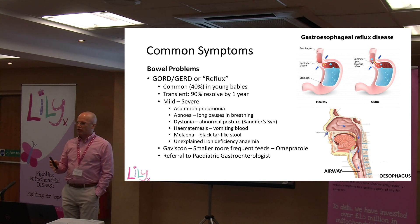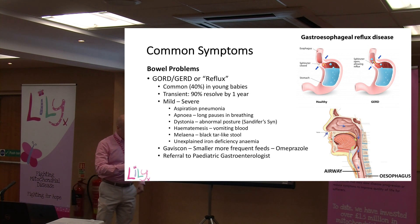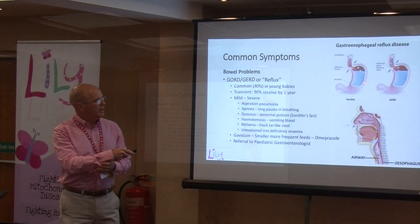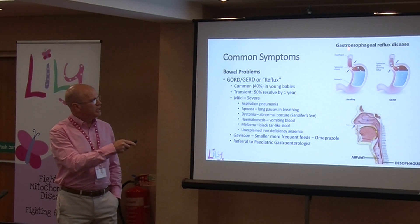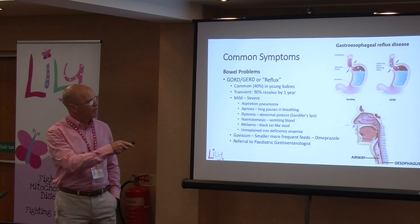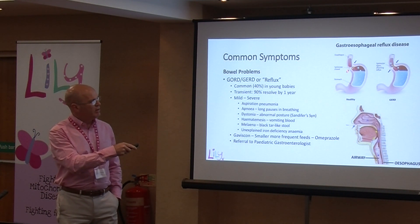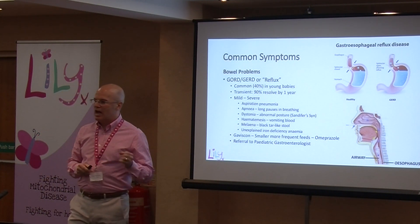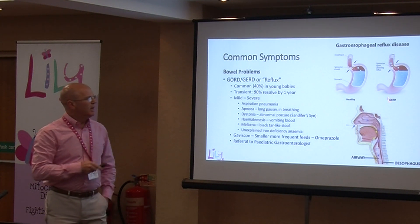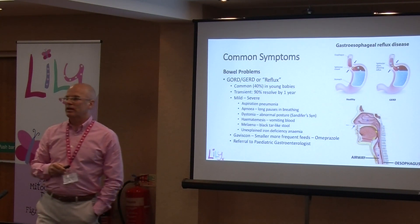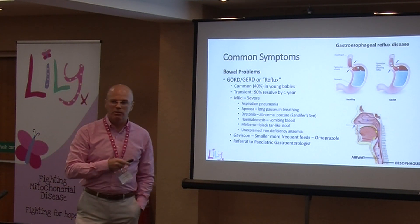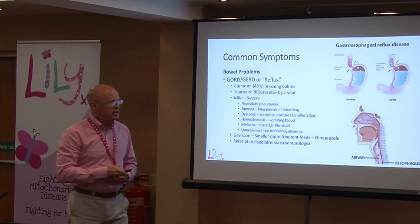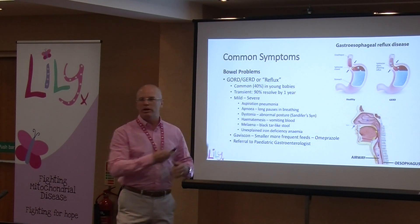So, why does reflux occur and what is it? If you look at this diagram, this is the stomach with liquid in it, and there's a sphincter just here. The oesophagus is the pipe that connects the mouth to the stomach, and there's what's called a sphincter, or a muscle. Under normal circumstances, that muscle is closed, and that keeps the contents of the stomach in the stomach.